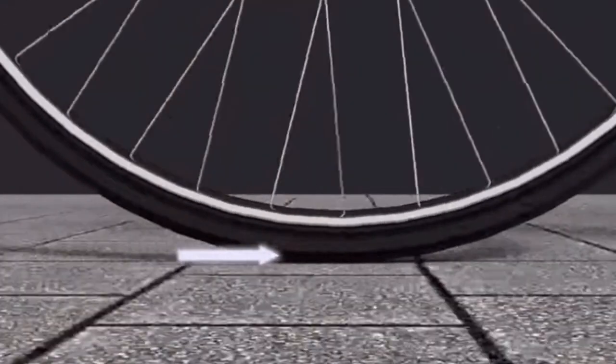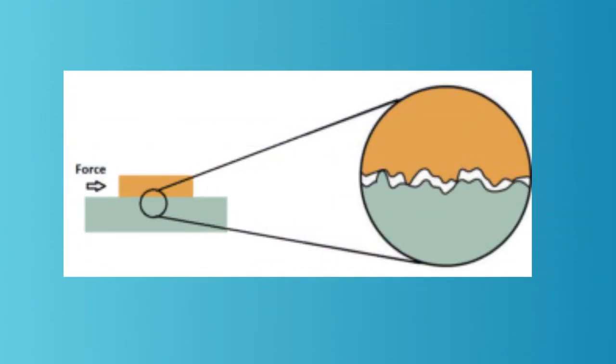The surfaces of the body which come in contact have many ups and downs known as pits and heights. These pits and heights will be more in rough surfaces. These pits and heights get interlocked with each other when one body moves over the other.